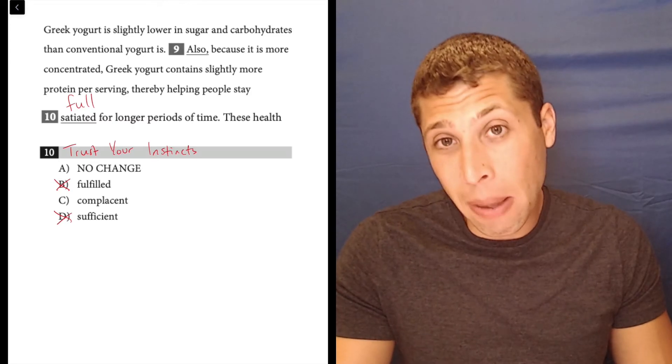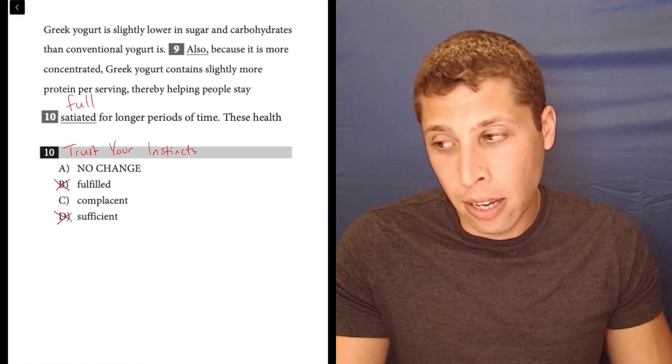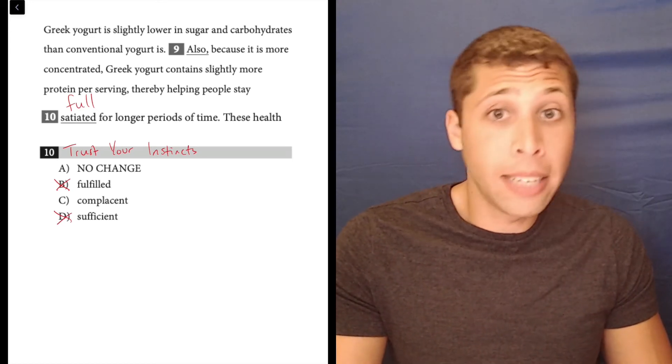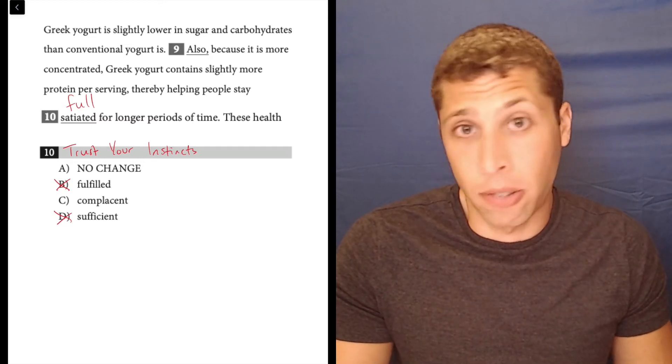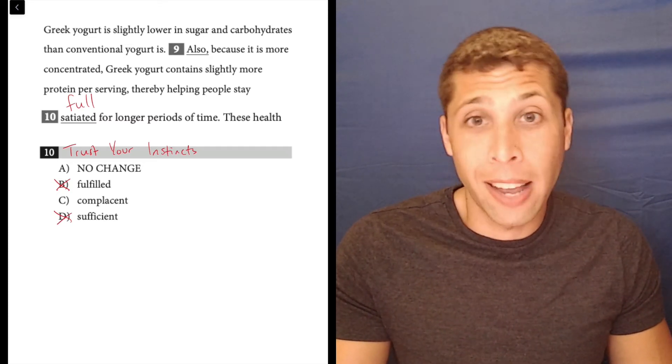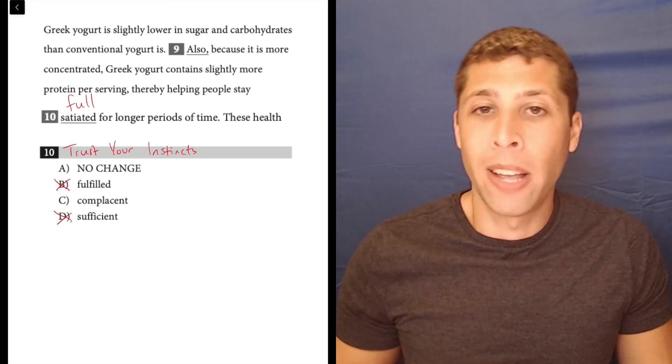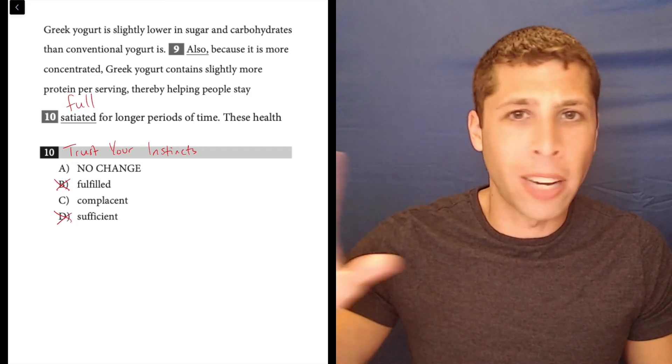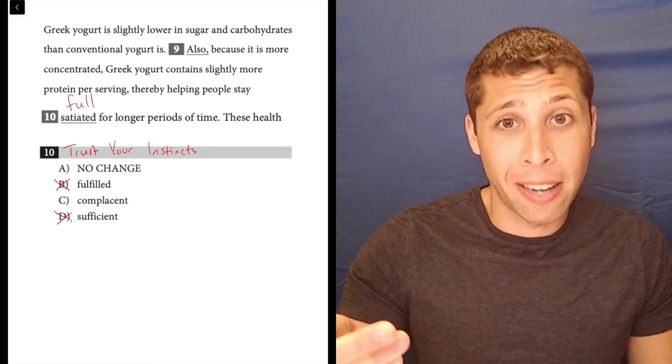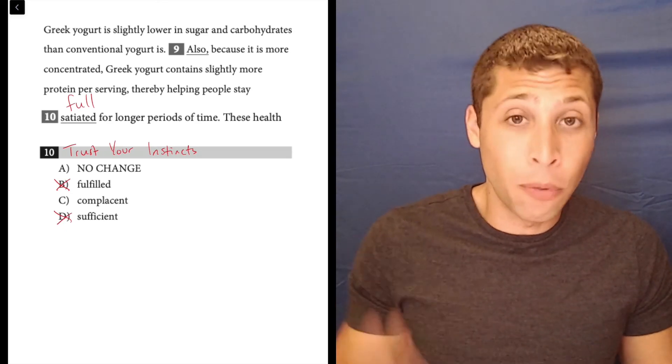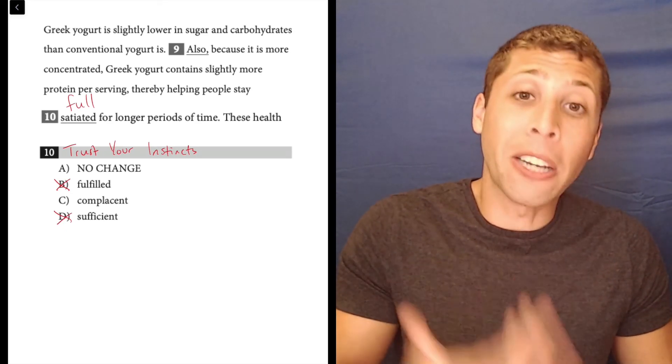Then we have two words that maybe we don't really know the definitions of very well: satiated and complacent. Well, if you are complacent, it means you're kind of lulled into a false sense of security. So, a lot of times maybe you have a couple good grades on some tests in school. You're doing great in math and you've got a couple good grades. So, you get complacent and then a big test comes up and you don't study because you feel really good about your grade and then you do worse because you didn't study.